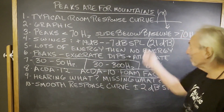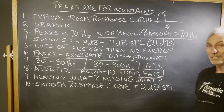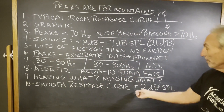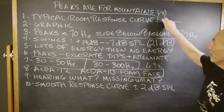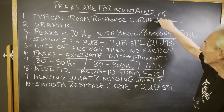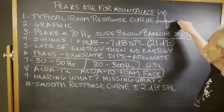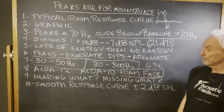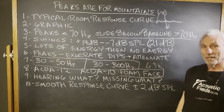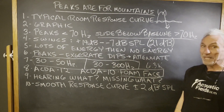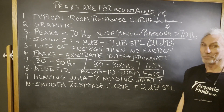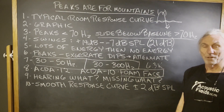What are you hearing? What are you missing with this kind of craziness? That's what you have to really think about. We want a nice smooth response curve — plus or minus 2 dB. It should look like a small snake crawling across the ground, or maybe an earthworm. No peaks, no dips. Peaks are for mountains, not for rooms. Hope this helps.